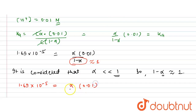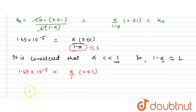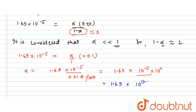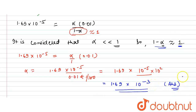From this, alpha = 1.69 × 10⁻⁵ divided by 0.01, which equals 1.69 × 10⁻⁵ divided by 1/100. Multiplying, we get alpha = 1.69 × 10⁻³. This is the degree of dissociation when HCl is added to the acetic acid solution, and it is indeed very small, confirming our approximation.